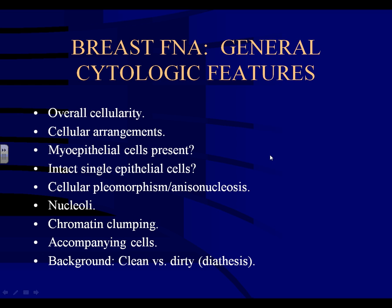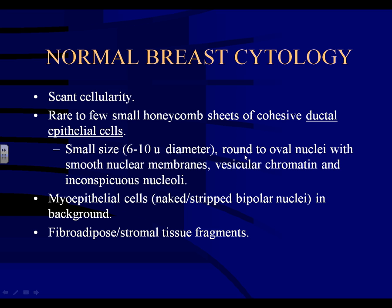Normal breast cytology is usually scantily cellular. It will have rare to few small honeycomb sheets of cohesive ductal epithelial cells — at least five to six groups to call it adequate. These cells have small uniform size measuring six to ten microns in diameter, round to oval nuclei with smooth nuclear membranes, vesicular chromatin, and inconspicuous nucleoli — just like any glandular cell you've seen elsewhere.